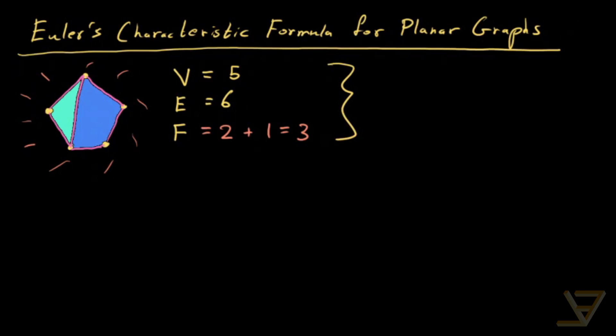So the formula or result that we get in this case is that V minus E plus F is equal to 5 minus 6 plus 3, and that's equal to 2.